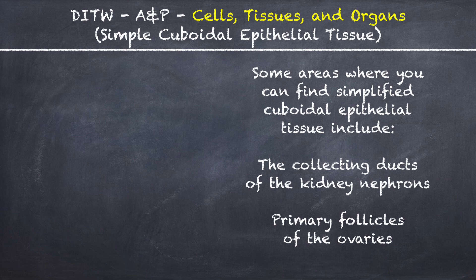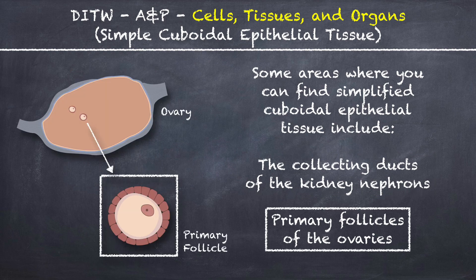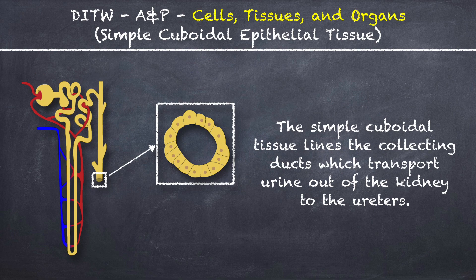Some areas where you can find simple cuboidal epithelial tissue include the collecting ducts of the kidney nephrons and the primary follicles of the ovaries. The collecting ducts are tubes found in the kidneys which are responsible for the transfer and excretion of urine from the renal tubules of the nephrons. The simple cuboidal tissue lines the collecting ducts which transport urine out of the kidney to the ureters.